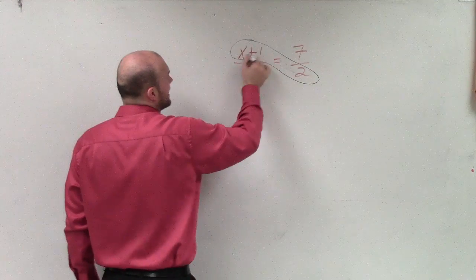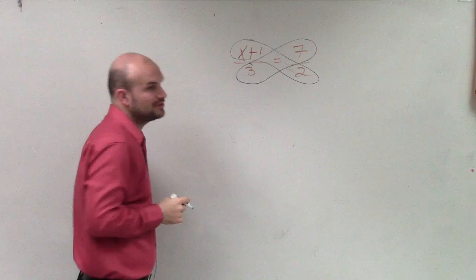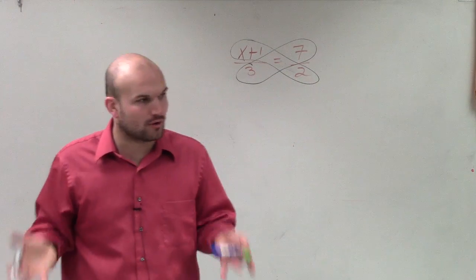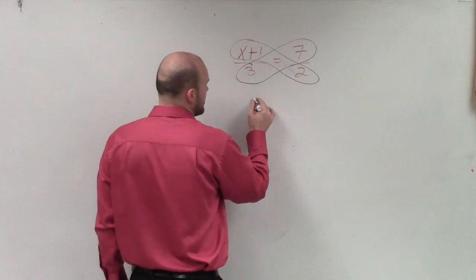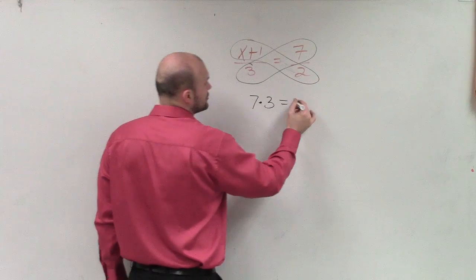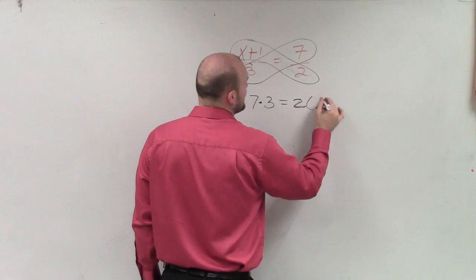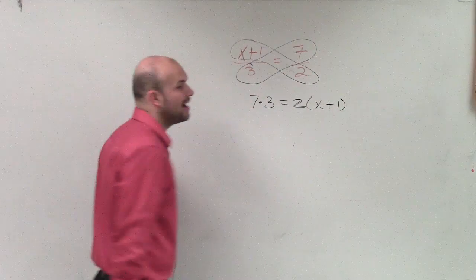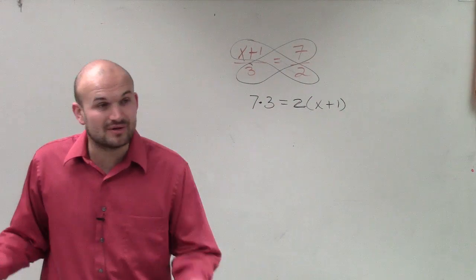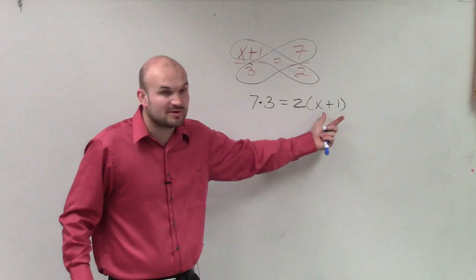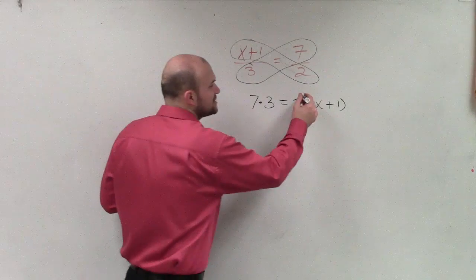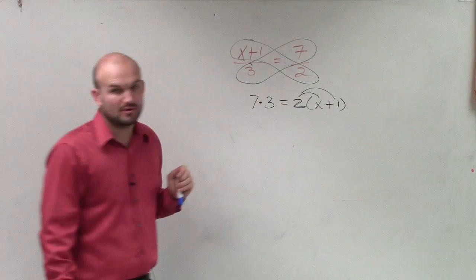And again, I stress with you guys to rewrite the products, which we call our cross products. 7 times 3 is equal to 2 times x plus 1. And why it's so important to write your cross product is, as you guys can see, I have to write that x plus 1 in parentheses, so I make sure that I apply distributed property.